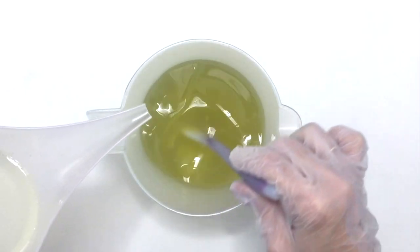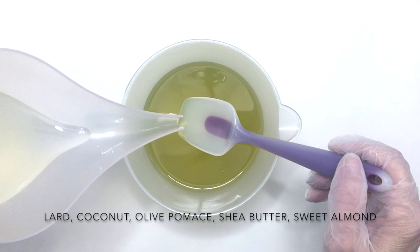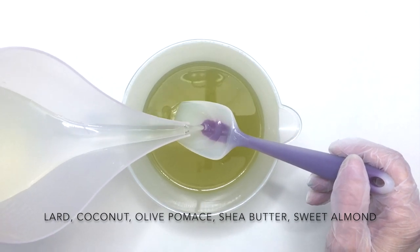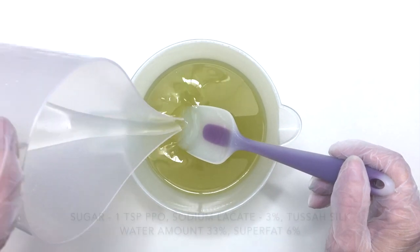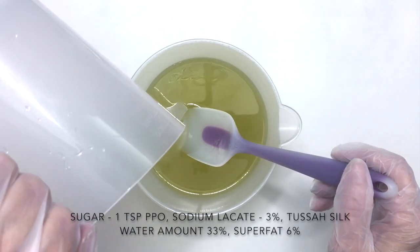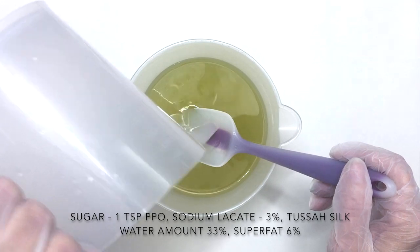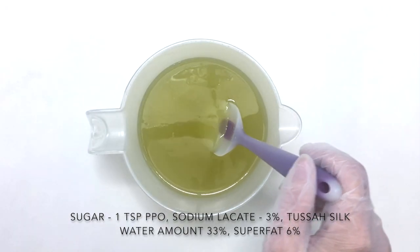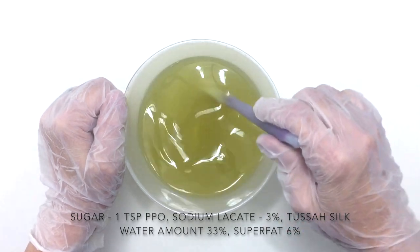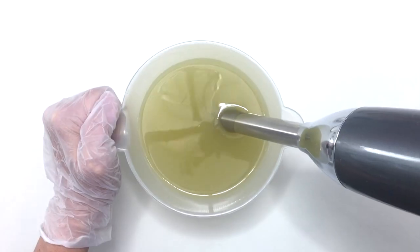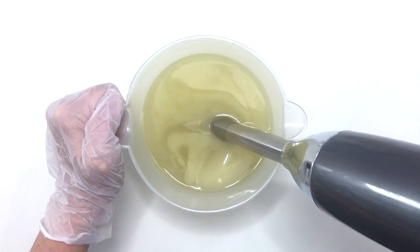I add my lye water to the melted oils. The oils I use are lard, coconut, olive pomace, shea butter, and sweet almond oil. My lye water has sugar, sodium lactate, and tussah silk already added. I'm using a 33% water amount and 6% super fat. I stick blend until it reaches a light trace.